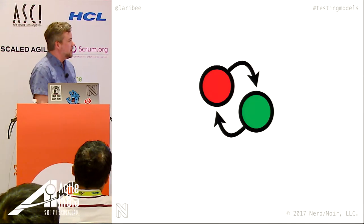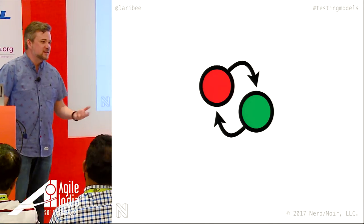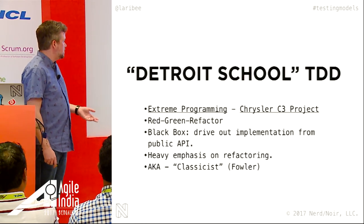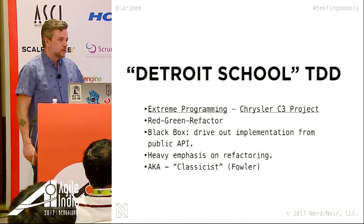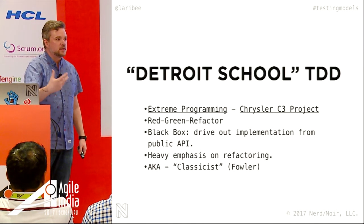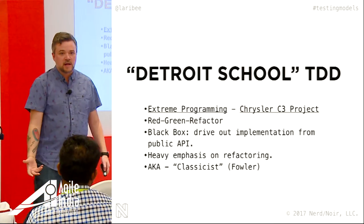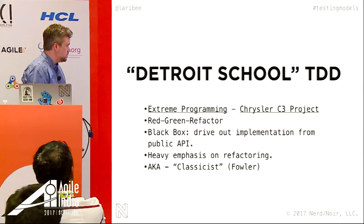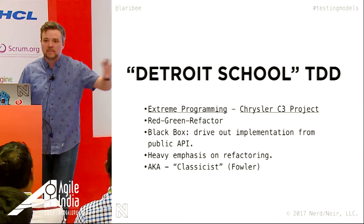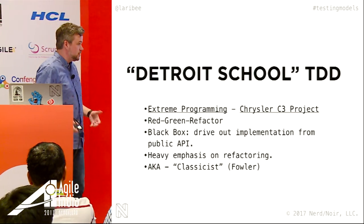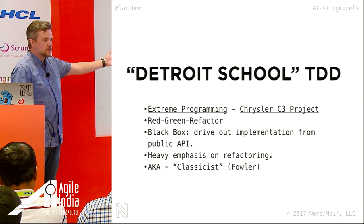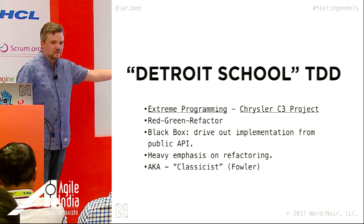Red, green — I intentionally left off 'refactor' because a lot of people forget to refactor. Two main schools of TDD. Detroit school: state-based verification, from extreme programming, Kent Beck, the Chrysler C3 project. The red-green-refactor loop — write a failing test, get it passing, then have the discipline to apply refactoring, which is changing the structure of the code without changing the behavior. A lot easier with statically typed languages like Java. Black box — you're driving out an implementation from a public API. If you're not doing refactoring, you end up with a series of small balls of mud.